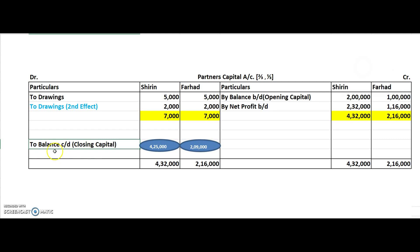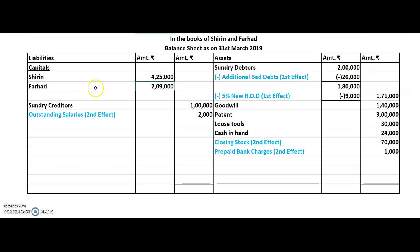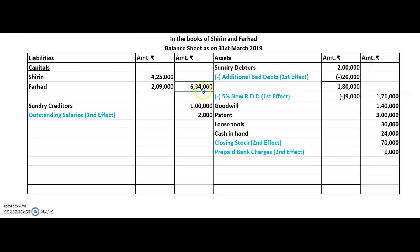The closing capital balance is carried down to the balance sheet on the liability side — Shirin 4,25,000 and Farhad 2,09,000 — total 6,34,000 in the outer column. The last step is to add the liability side and asset side of the balance sheet. With the required hard work and perfection, both sides must match. In our solution, both the liability side and asset side come to 7,36,000. Congratulations — all four steps are now successfully completed.